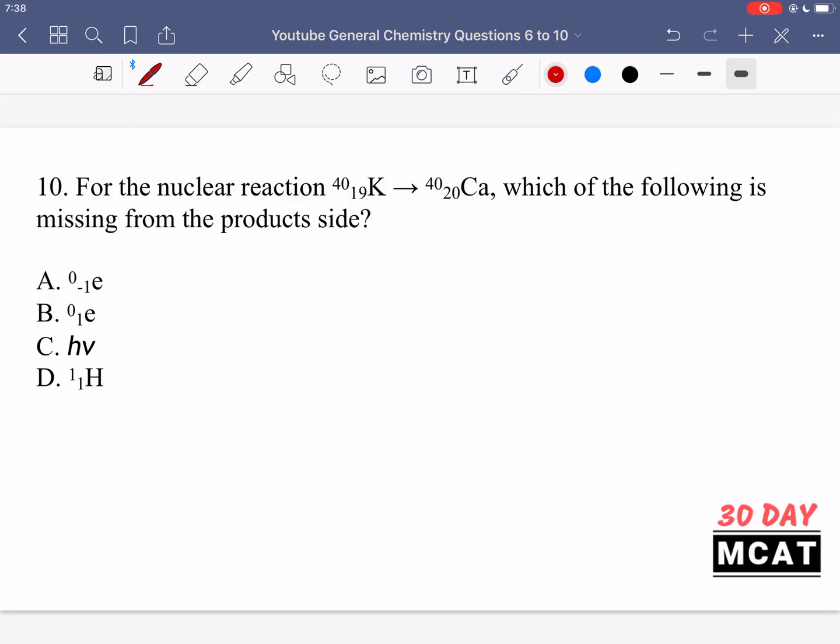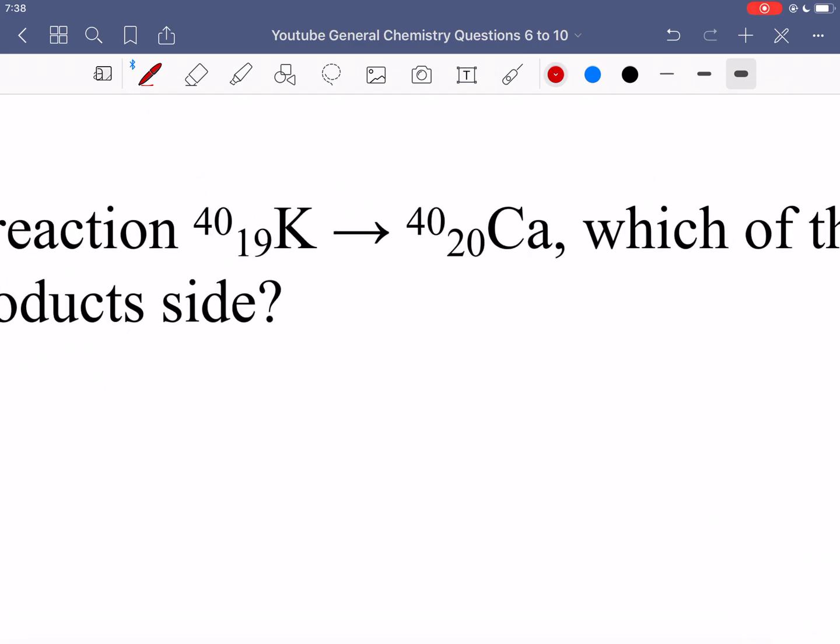And finally for question 10, it says, for the nuclear reaction where we have this potassium going to calcium, which of the following is missing from the product side? So what is missing for this reaction? We have the atomic weight, which is protons plus neutrons, and at the bottom we have the atomic number. We see that the weight at the top seems to be the same, but at the bottom, the atomic number has changed. It went from 19 to 20, which means that we gained a proton. So what happened here is that a neutron turned into a proton.